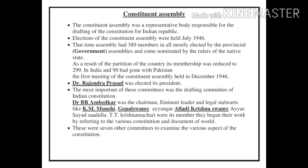Elections of the Constituent Assembly were held in July 1946. Here, there is a question: when there was no universal adult franchise and people had no rights to vote or elect their representatives, what was the meaning of the election and who gave the vote for the assembly?